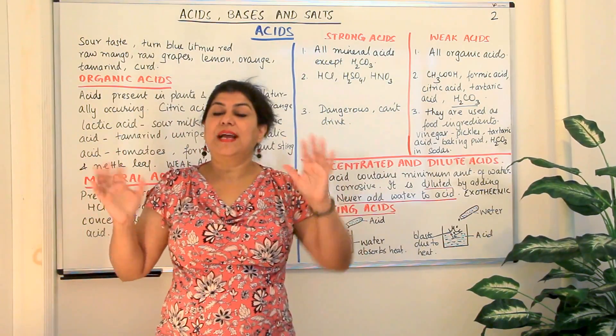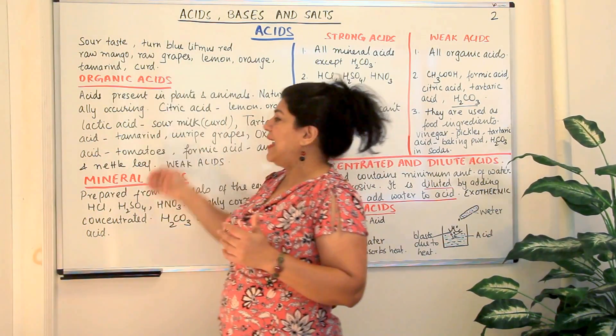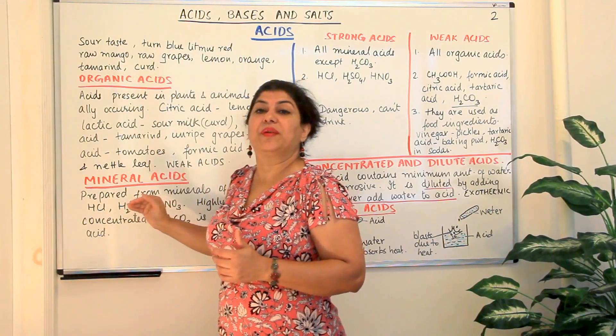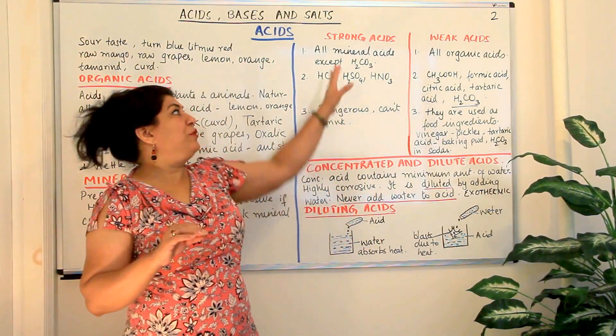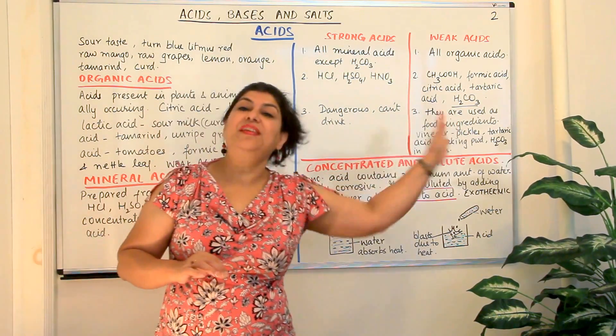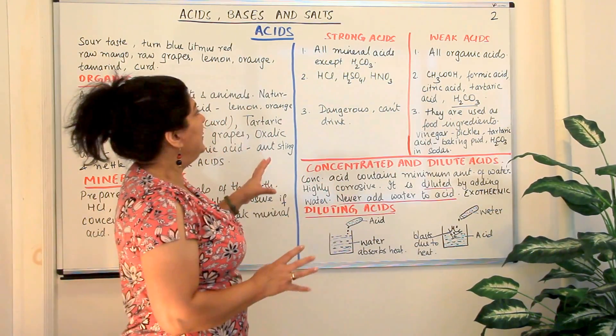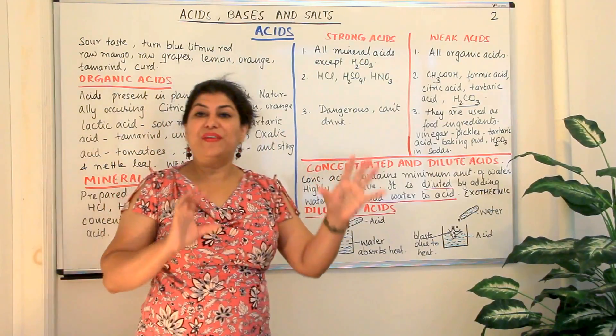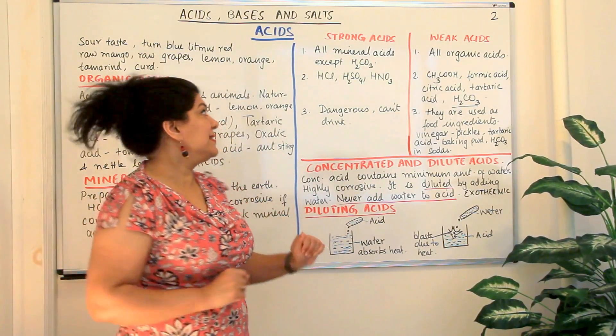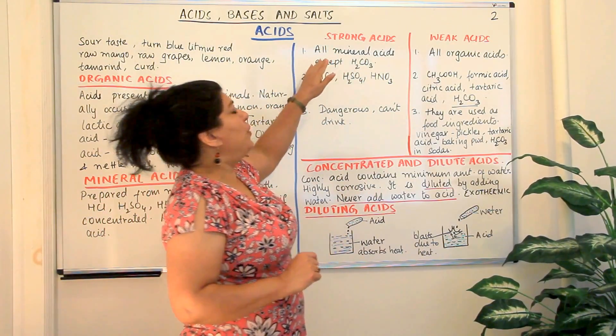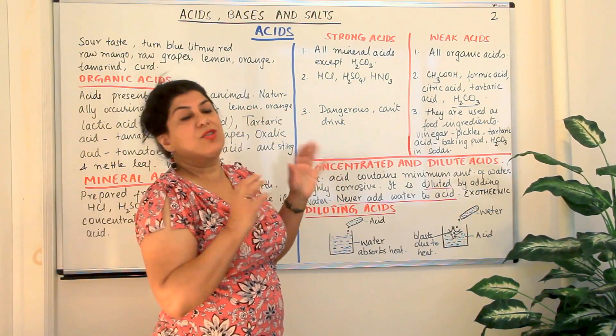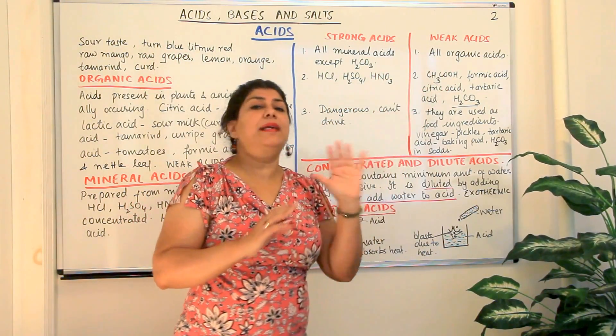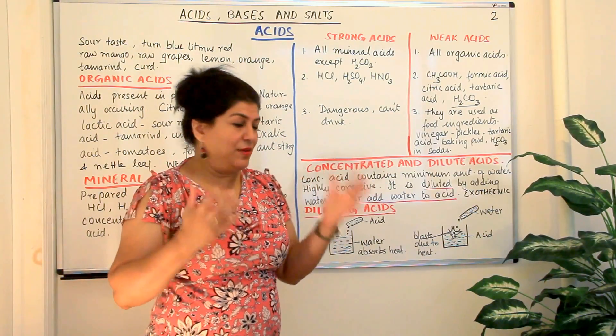So now, what do we understand from this? That not only can you categorize acids into organic acids and mineral acids, there can be another way of classifying them and that would be strong acids and weak acids. So I've made a table of these. What are the three points that differentiate a strong acid from a weak acid? A strong acid is one which is, all mineral acids are strong acids and all organic acids are weak acids that we already know.